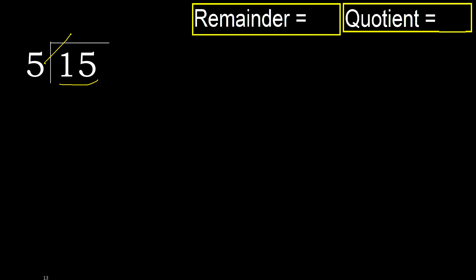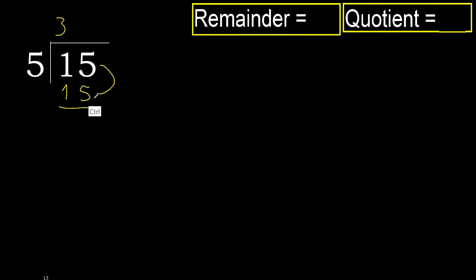But not greater. 5 multiplied by 4 is 20. 5 multiplied by 3 is 15 — okay, it's not greater. 15 minus 15 equals 0.